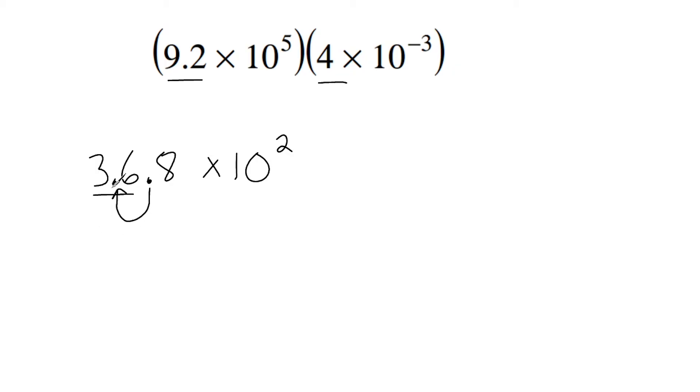However, if you move this decimal, we have to adjust this exponent here. Now, how do we adjust this exponent? Well, it's actually quite simple. Because we move the decimal one space to the left, we made this value one power of 10 smaller. So we do the opposite by making this one power of 10 larger. So we are going to rewrite this as 3.68 times 10 to the third power, which is our final answer.